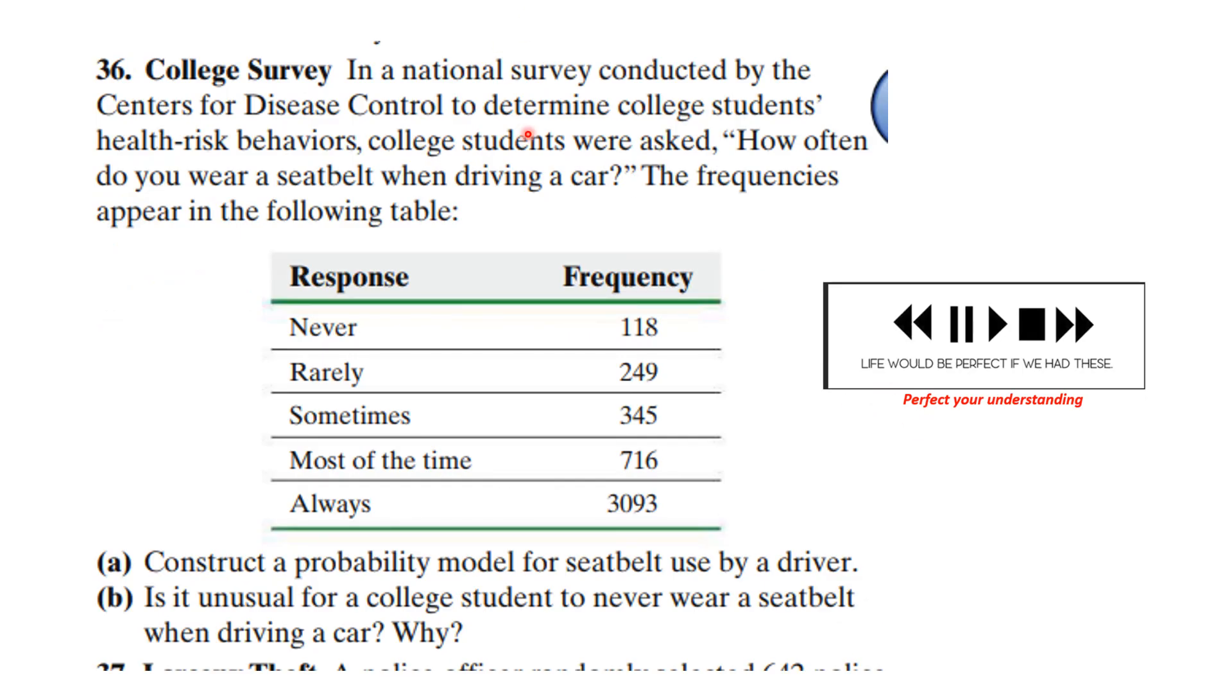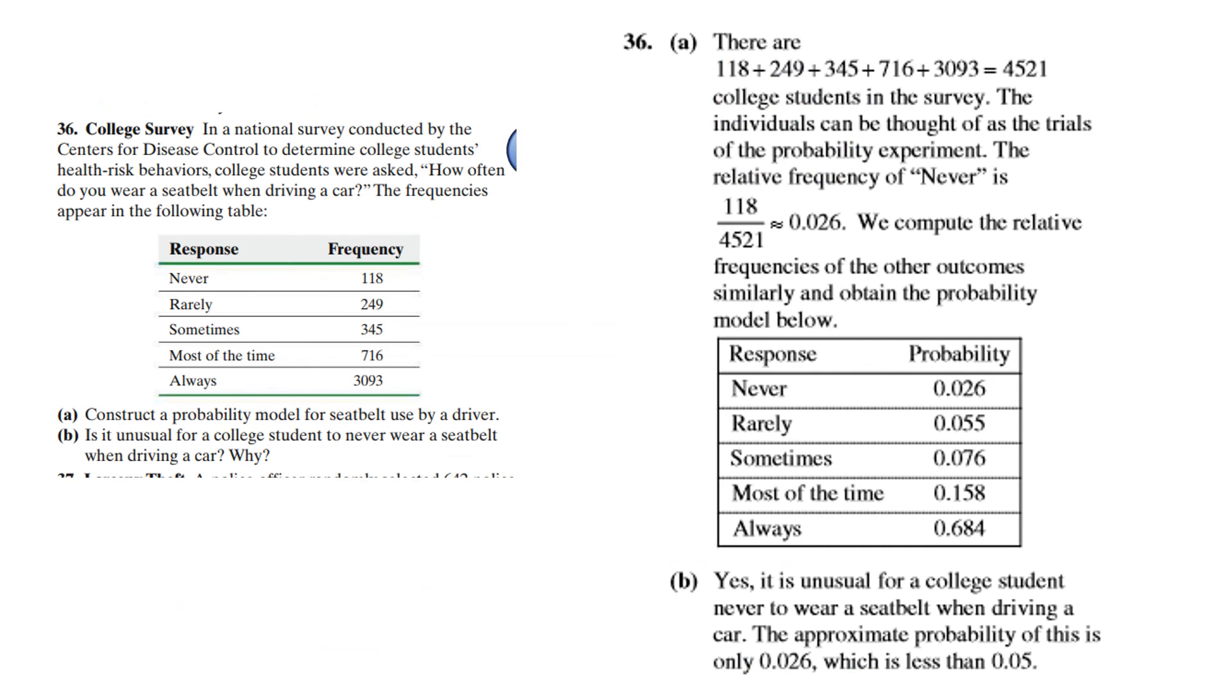Again, another problem from section 5.1. You know what to do and when to do it. Let's see how you did. Well, there were a total of this many students in the survey. And you can think of them as trials. And then you just take the ratio. So it's 118 out of 4521. It's a little better than two percent. And you can compute all these. Yes, it is unusual because that is less than five percent.